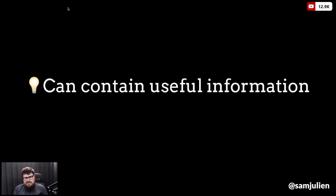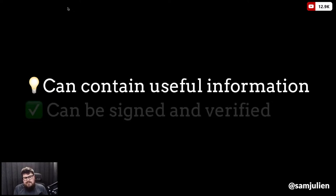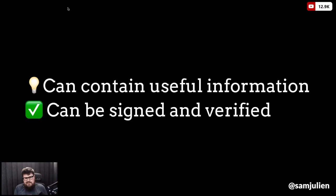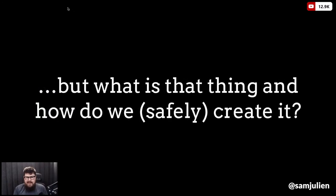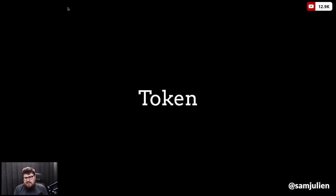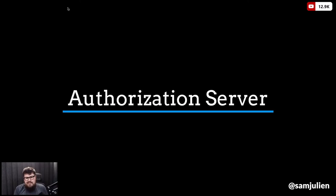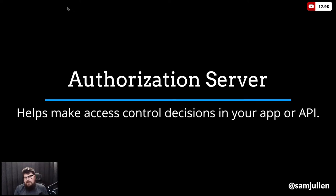We need something other than a cookie for this problem. We need an artifact that can contain useful information and also be signed and verified — since it's going to be used to access all these different pieces of a puzzle, we need to know it came from one trusted source. That thing is called a token. And there's another piece of jargon called an authorization server — the thing that creates the token and helps make access control decisions in your app or API.